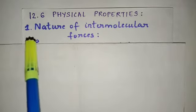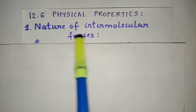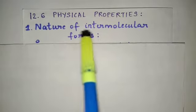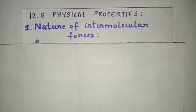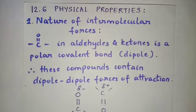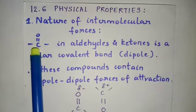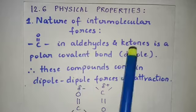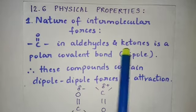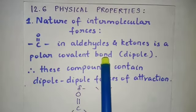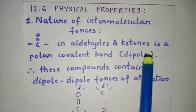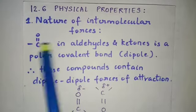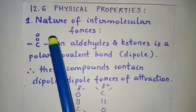The very first physical property that we are discussing is the nature of intermolecular forces. You all have learnt about intermolecular forces in your 11th standard. You can see the C double bond O, that is the carbonyl group in aldehydes and ketones, is a polar covalent bond. A polar covalent bond is also known as a dipole. Polar covalent bond means it has partial charges on it.